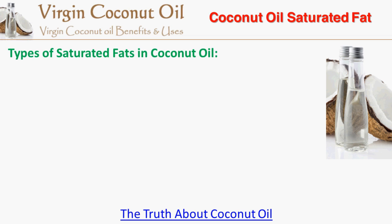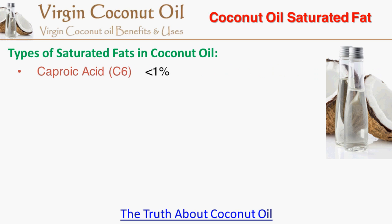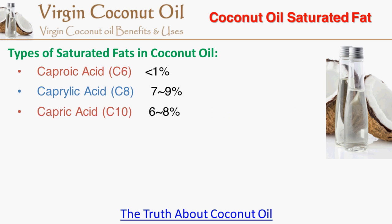The types of saturated fats or fatty acids in coconut oil are as follows. It has less than 1% of caproic acid, or the 6-carbon fatty acid. It has about 7-9% of caprylic acid, which is an 8-carbon saturated fatty acid, and about 6-8% of capric acid, which is a 10-carbon saturated fatty acid, and about 46-50% of lauric acid, which is a 12-carbon fatty acid.